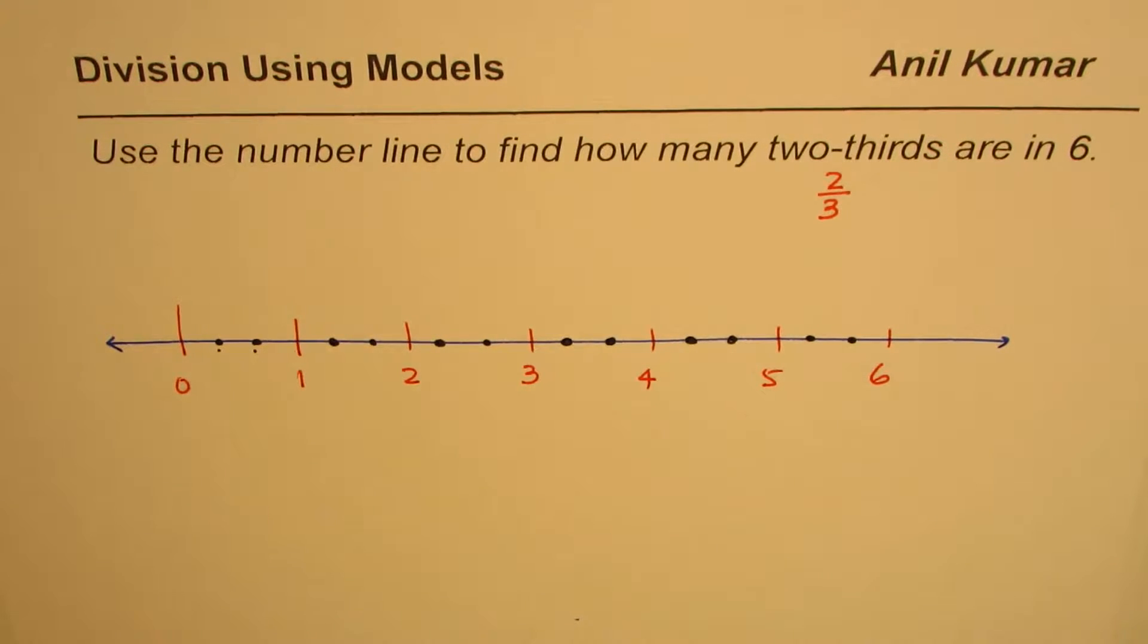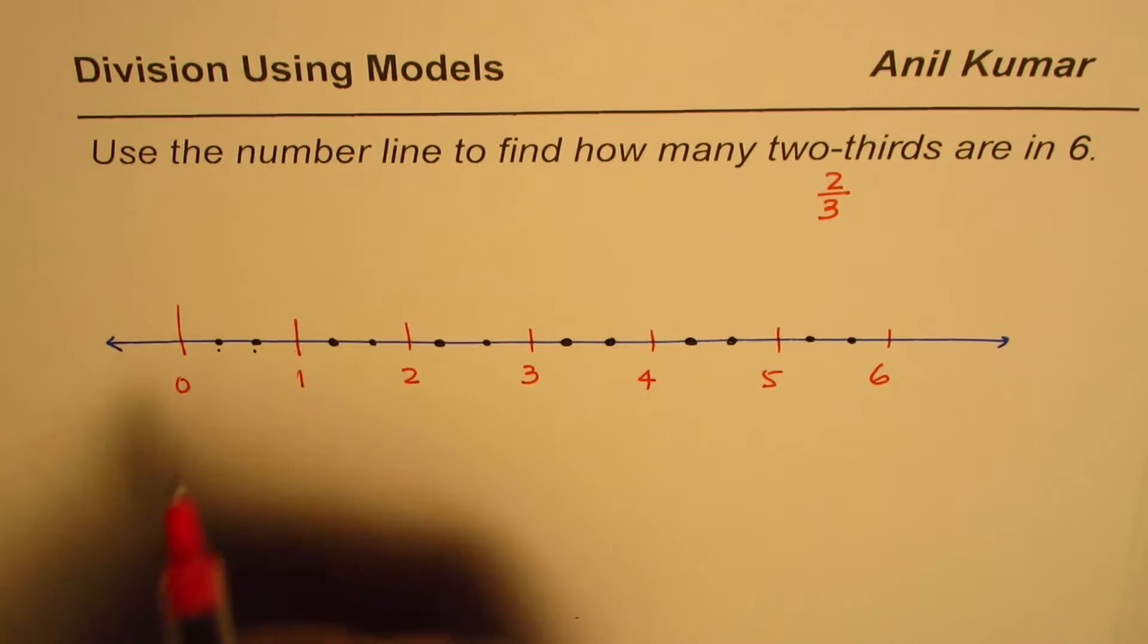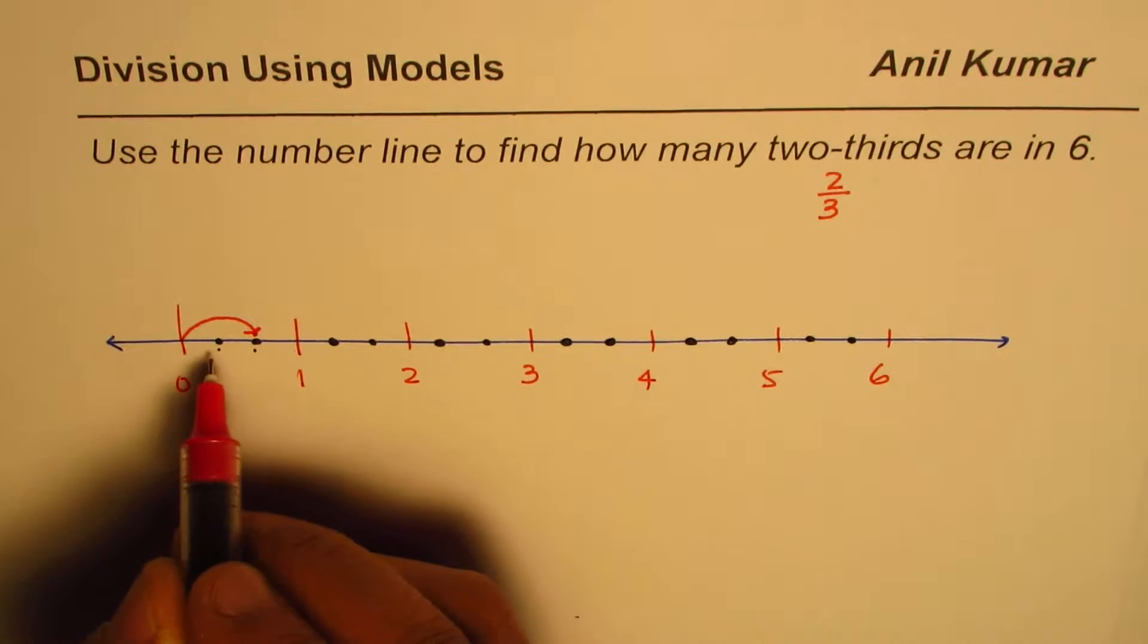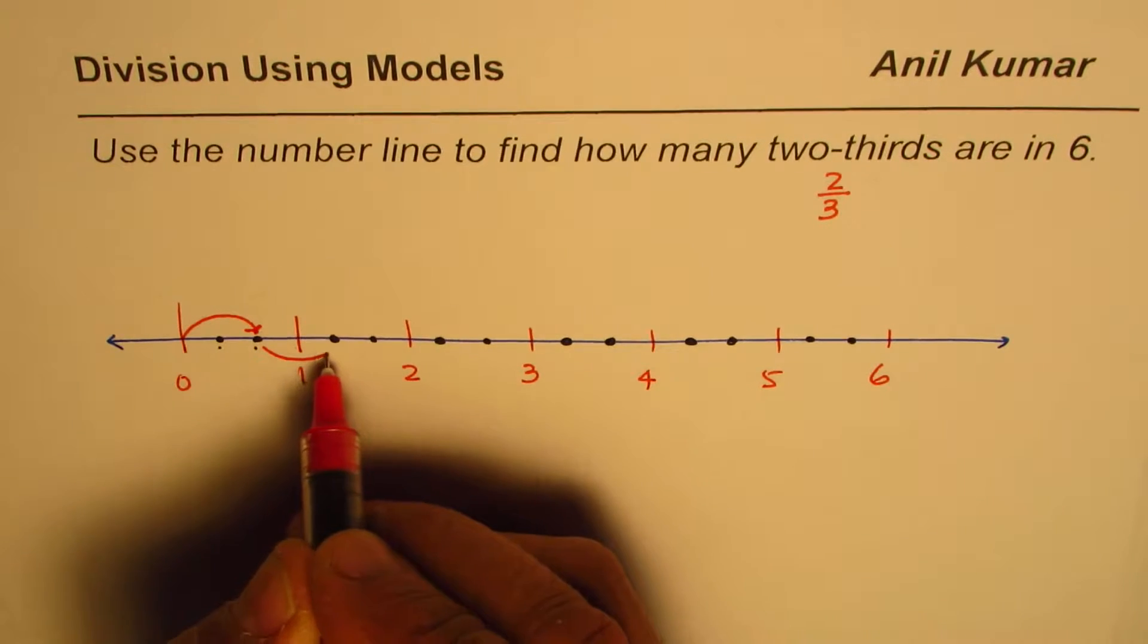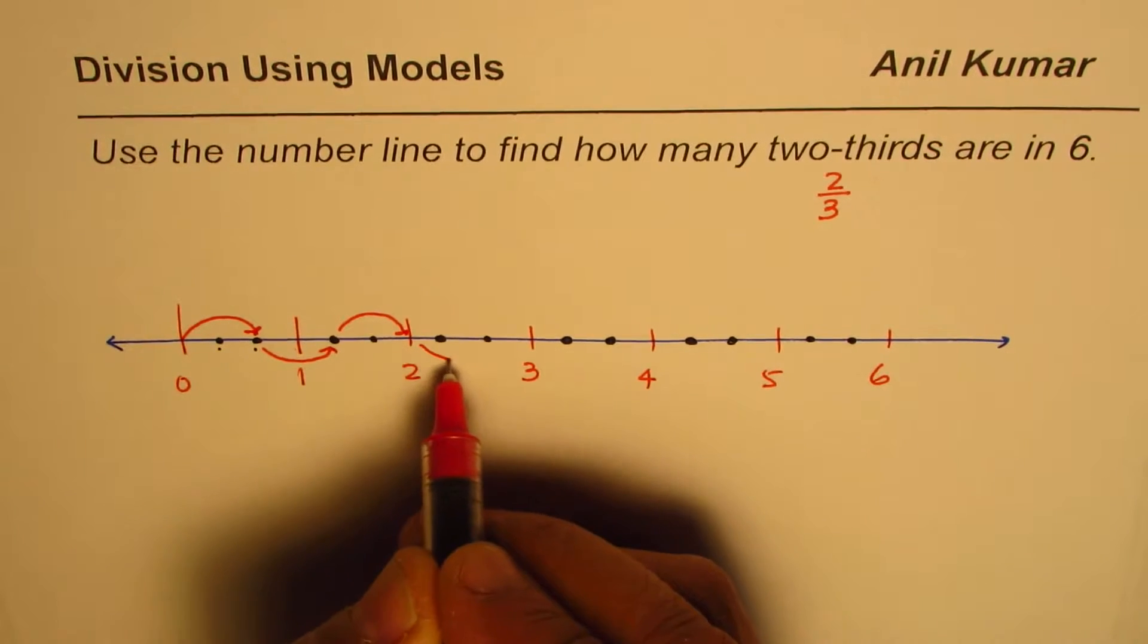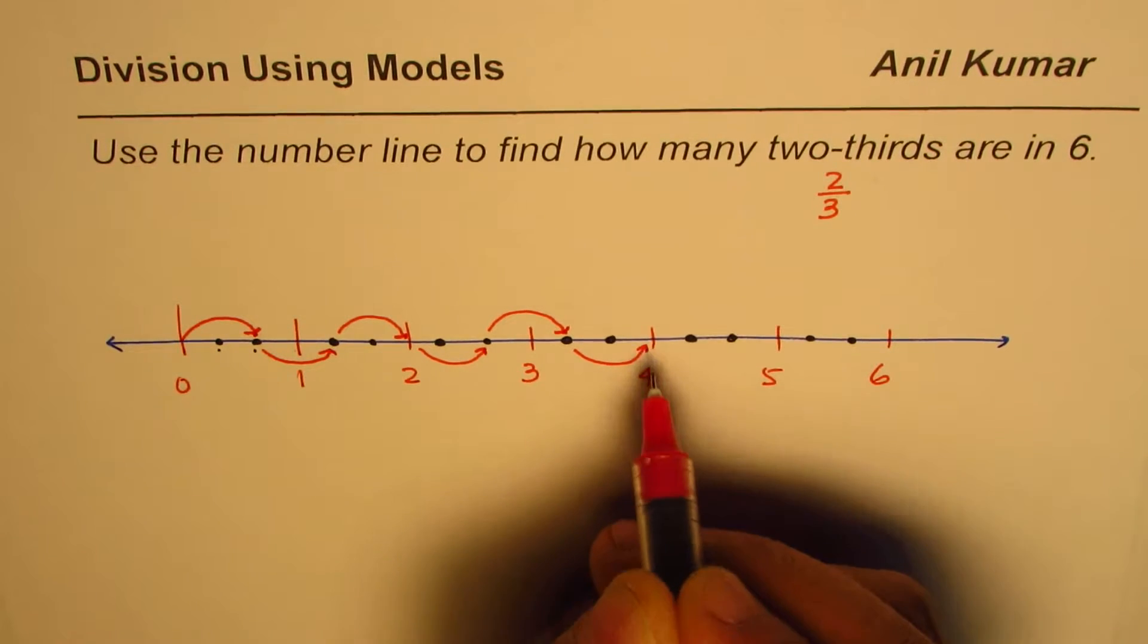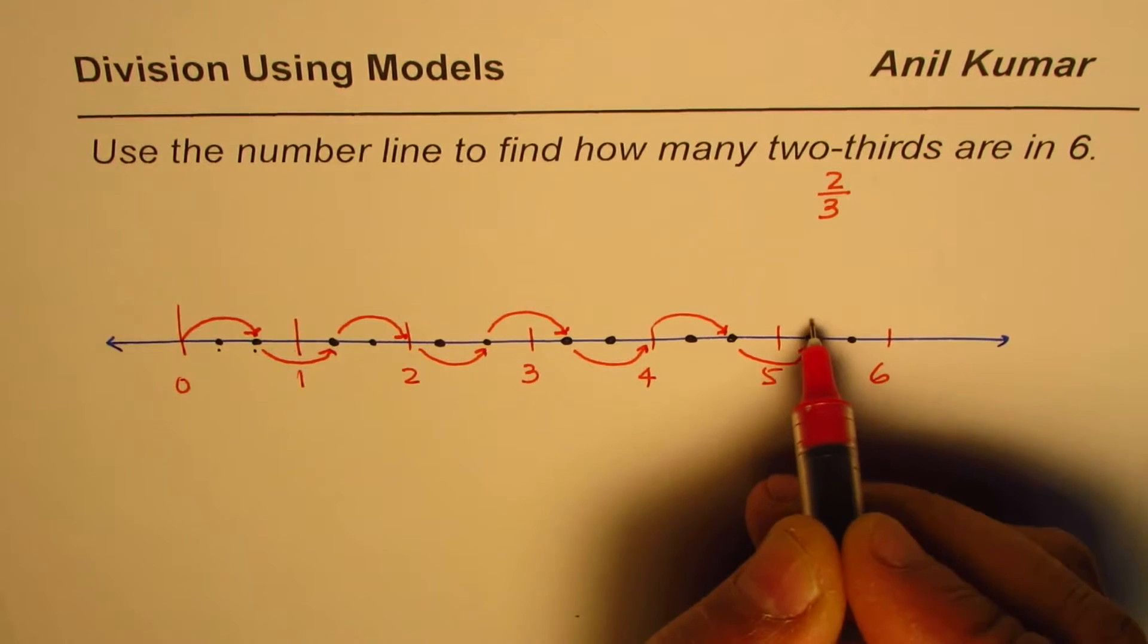Now, when we see how many two-thirds. So this is one-third, two-thirds. So first step, we could get one like this is one. One-third, two-third. Then again, we can have this one. One-third, two-third. Then again, we can have this one and then this one and then this one and like this and like this and like this and like this.